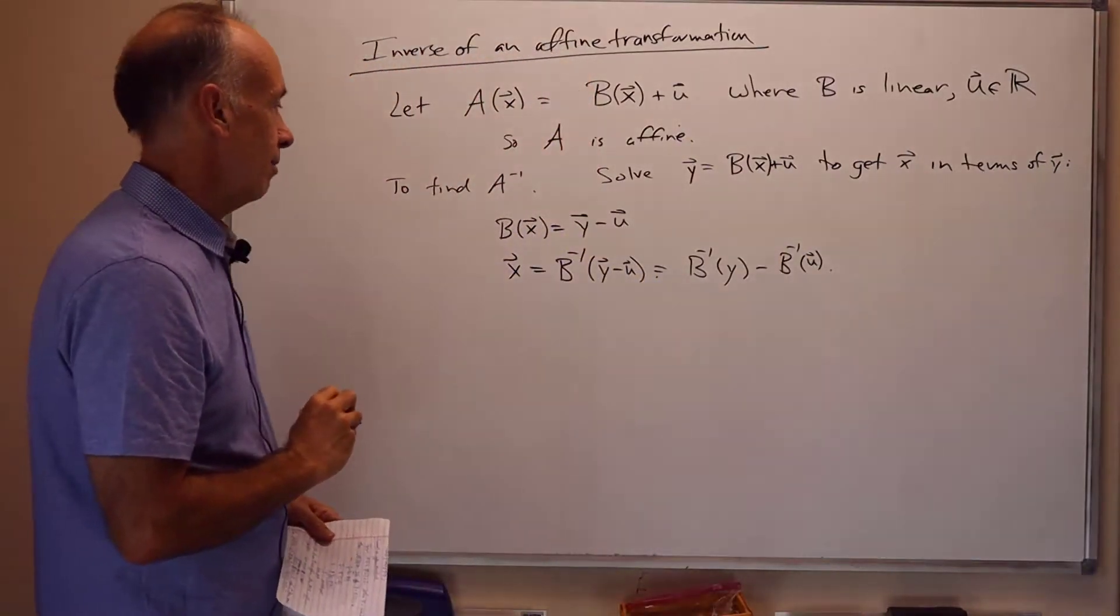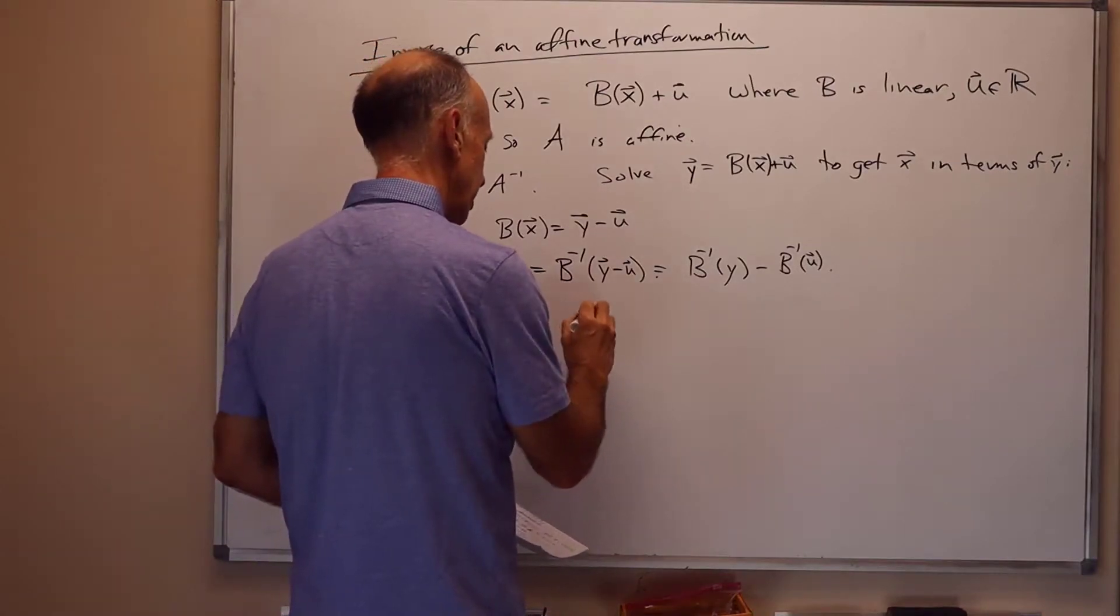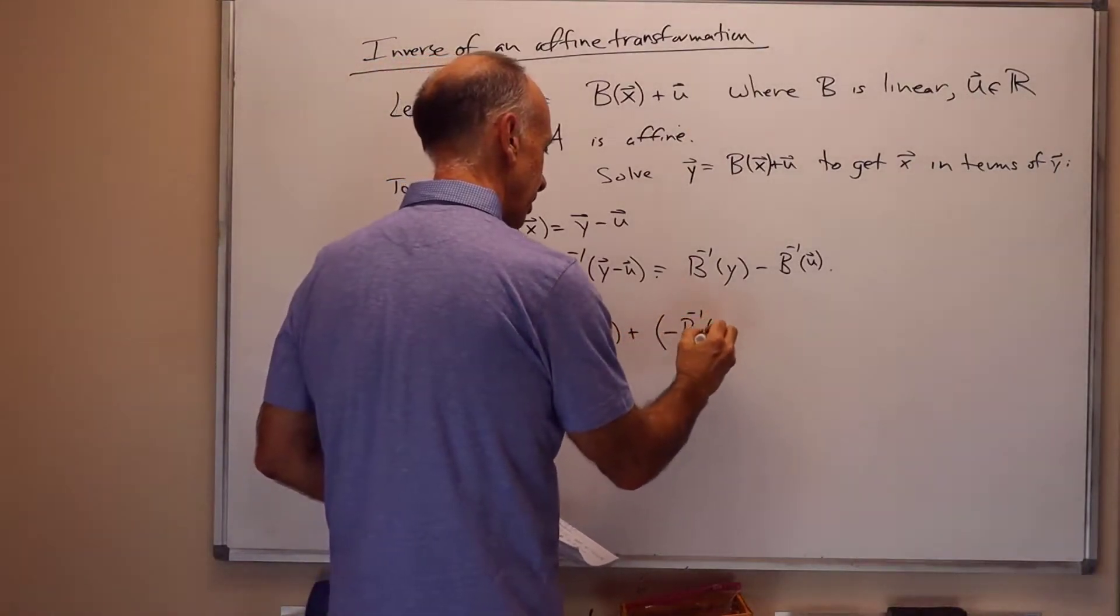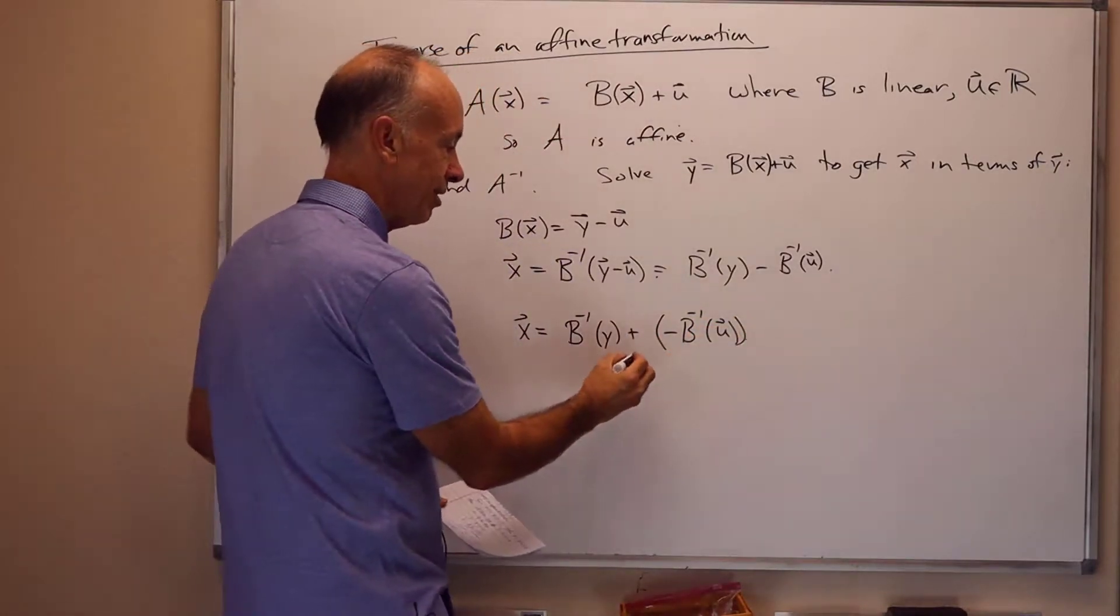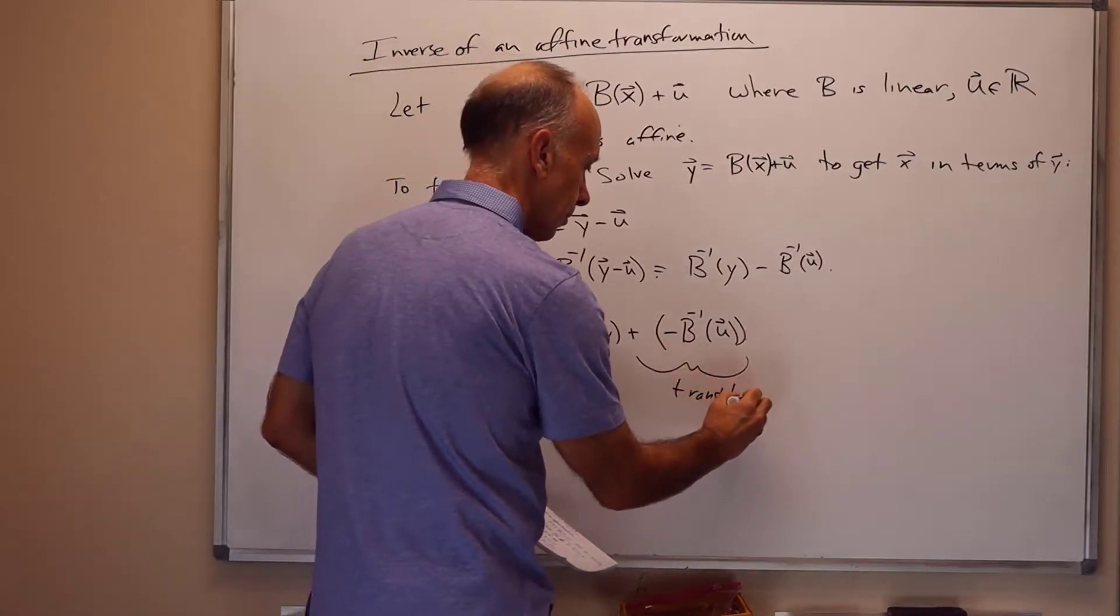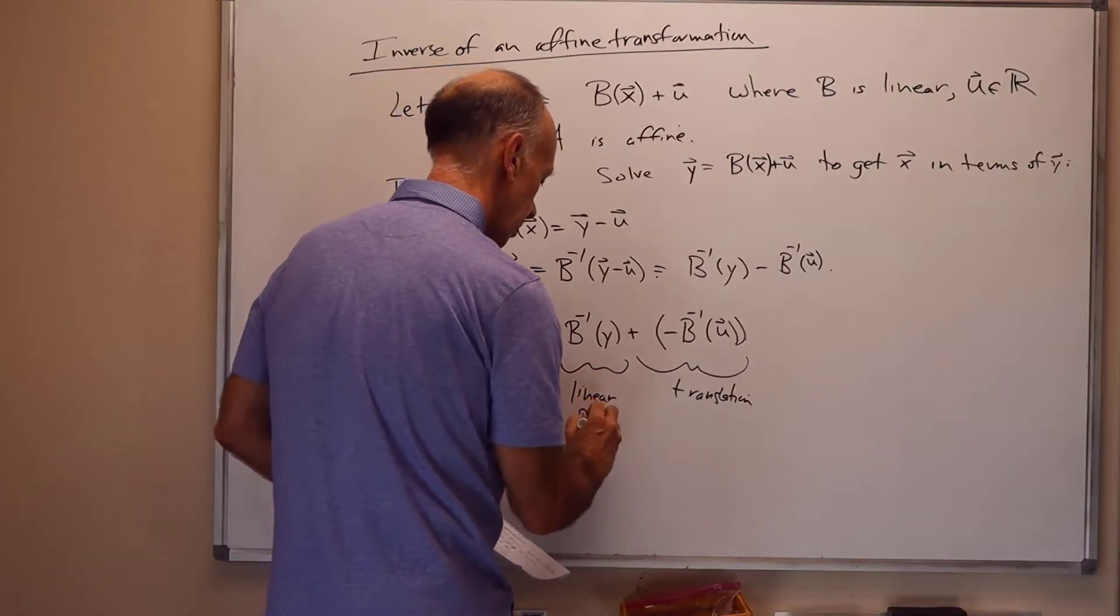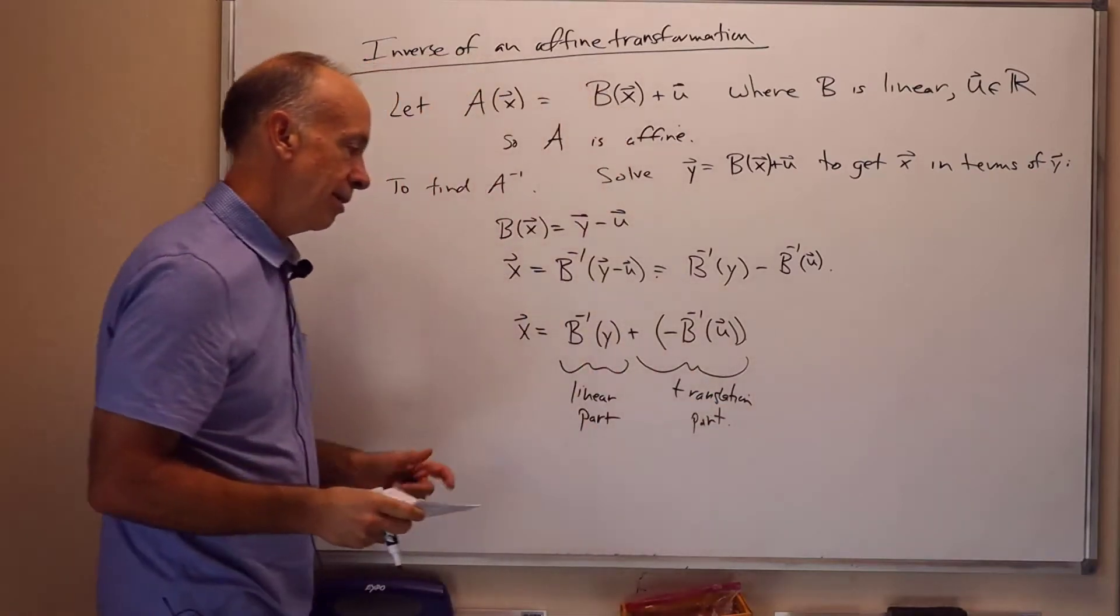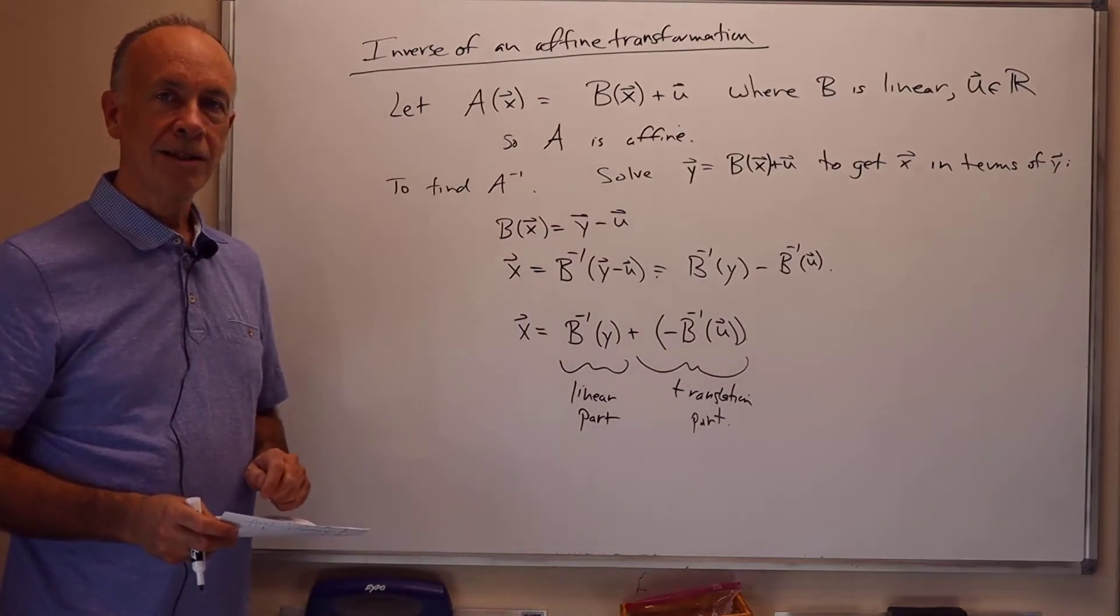And now we're done. We've written x in the form B inverse of Y, and then it's going to be plus minus B inverse of U. I wrote it in this somewhat awkward thing to say, here's the translation part, and here's the linear part. And that's what we want when we're showing that things are affine. We want to have a linear part plus a translation part. That's it for this presentation. Thank you very much.